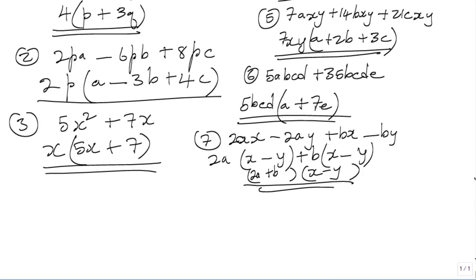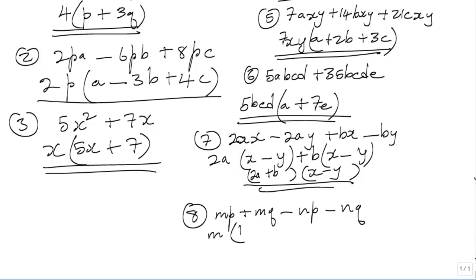The final example is question 8: MP plus MQ minus NP minus NQ. We're doing factorization by grouping. What is common to MP and MQ is M, so you take out M. M into MP is P and M into MQ is Q. Minus: what is common to NP and NQ is N, so you take out N. Negative N into negative NP is positive P, and negative N into negative NQ is positive Q.